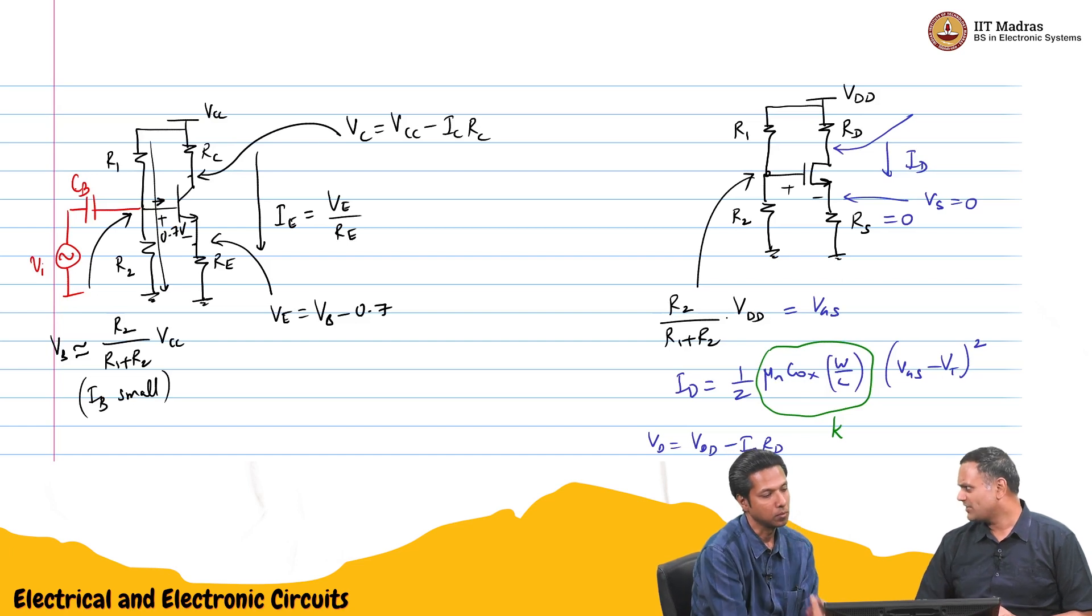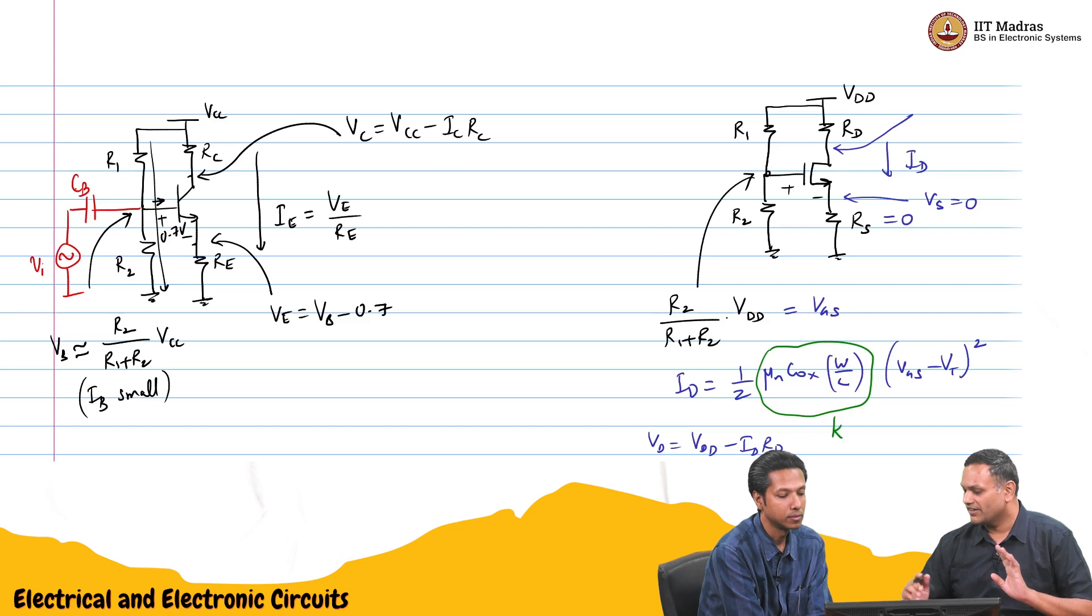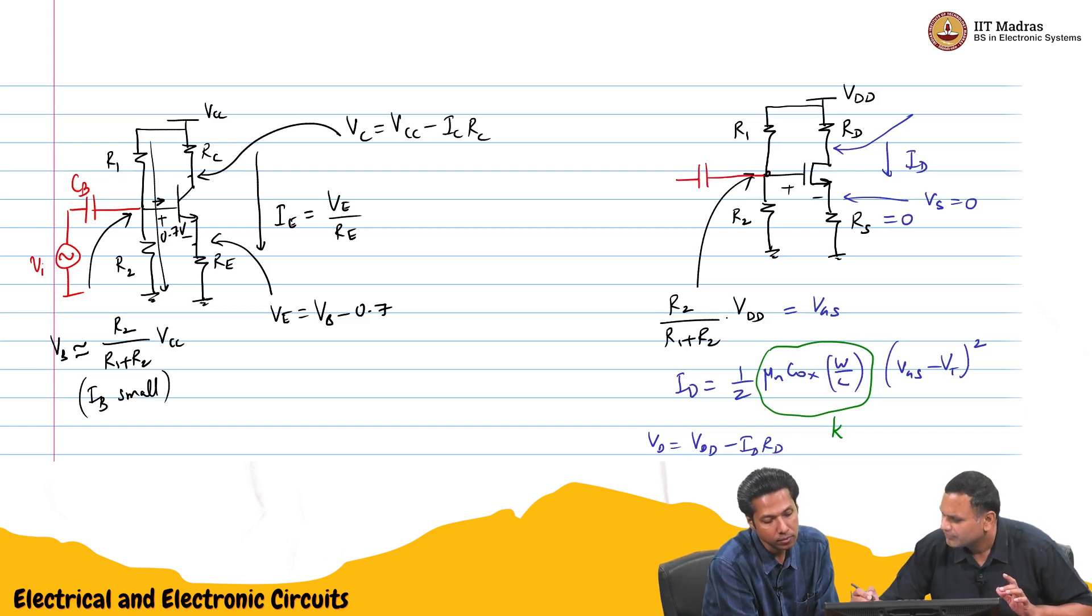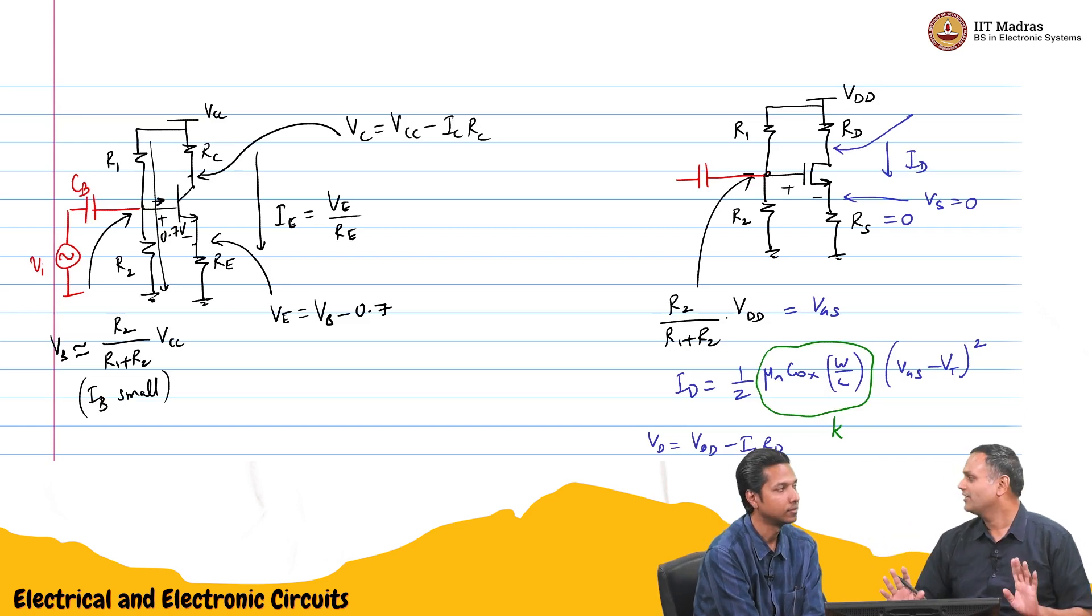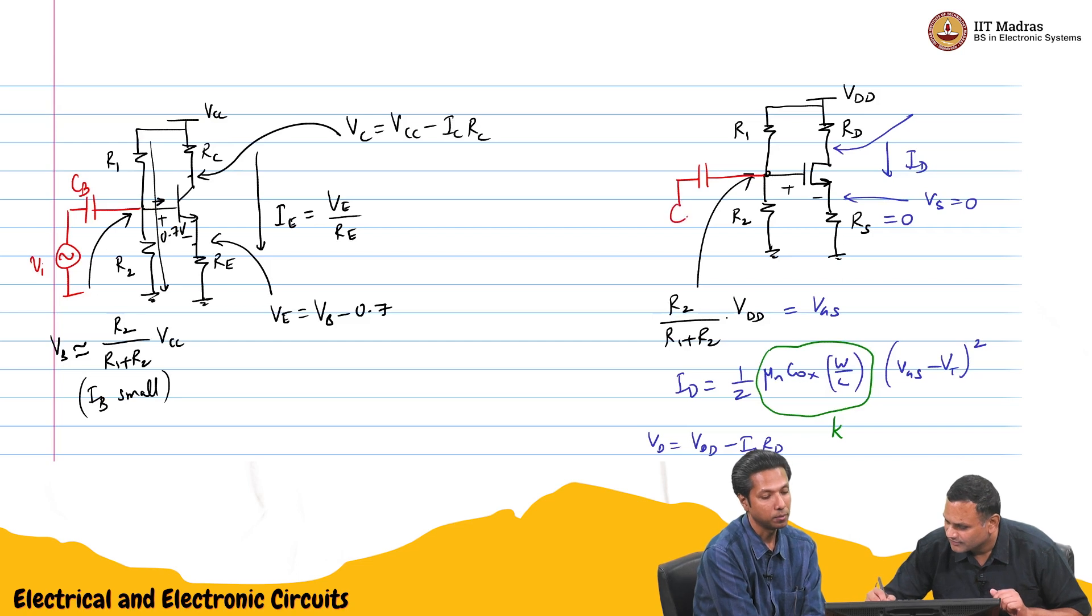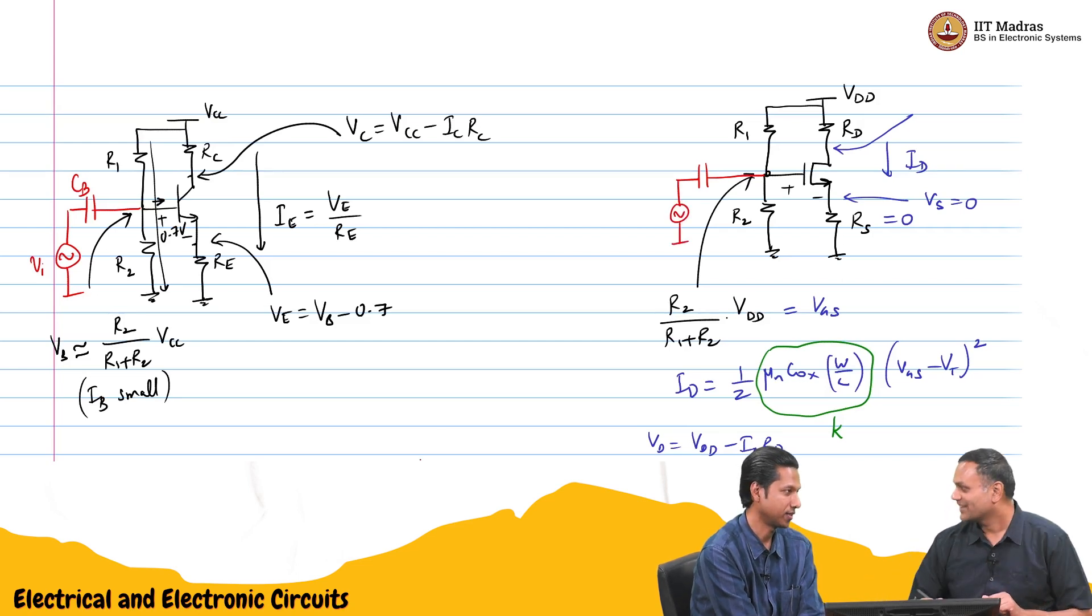We can assume the same thing here. That is the signal we want to amplify. We will do the same thing here. We will choose the capacitor large enough such that short circuit for AC, open circuit for DC. The bias voltage is not touched by VI. Correct.